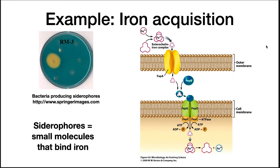Siderophores are one example that demonstrates the effort cells are willing to put in to capture a necessary element. The cell synthesizes a molecule, enterochelin, that binds Fe³⁺. Iron can often be difficult to obtain in the environment. The cell secretes it into the environment, and when iron is bound, it can enter the FepA porin and pass through the outer membrane. At the cell membrane, it is transported across the FepB, G, D, and C proteins — an ABC transporter. Hopefully you remember that from Module 2.